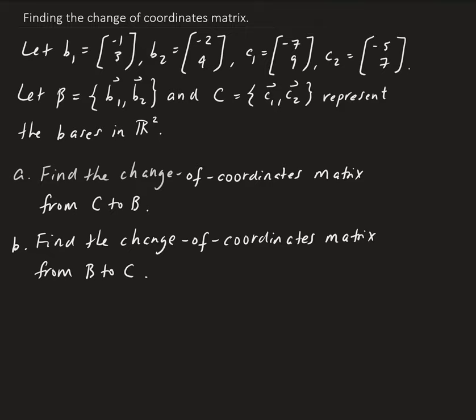In this video lesson, we want to find the change of coordinates matrix from C to B. Once we have that, it's relatively easy to reverse it, because once we find the matrix, we can just take the inverse to go from B to C, which is asked in part B. We're given basis vectors B1 and B2 for B, and C1 and C2 for C. I'm going to show you the long approach first, and then a shortcut.